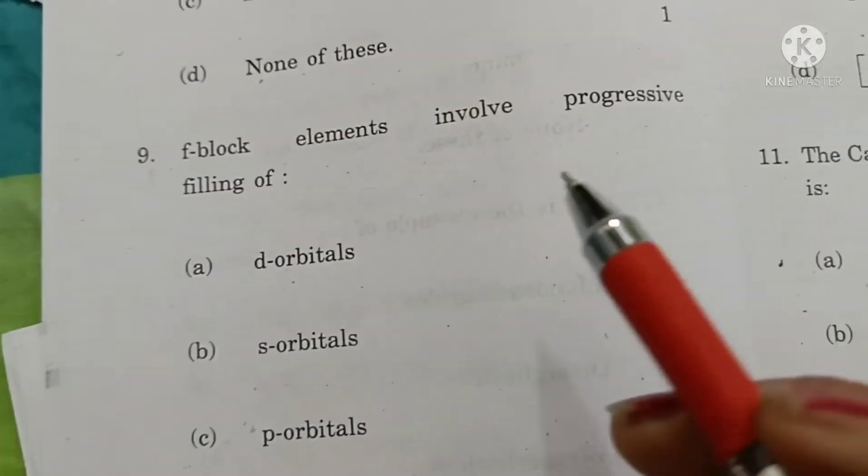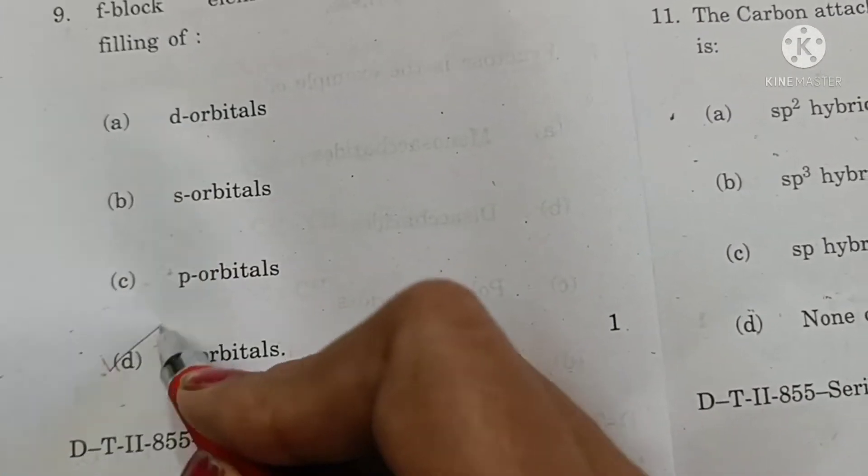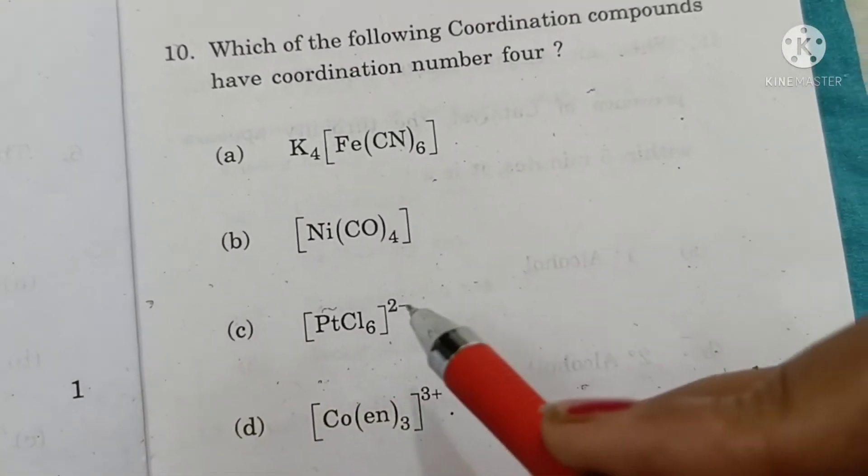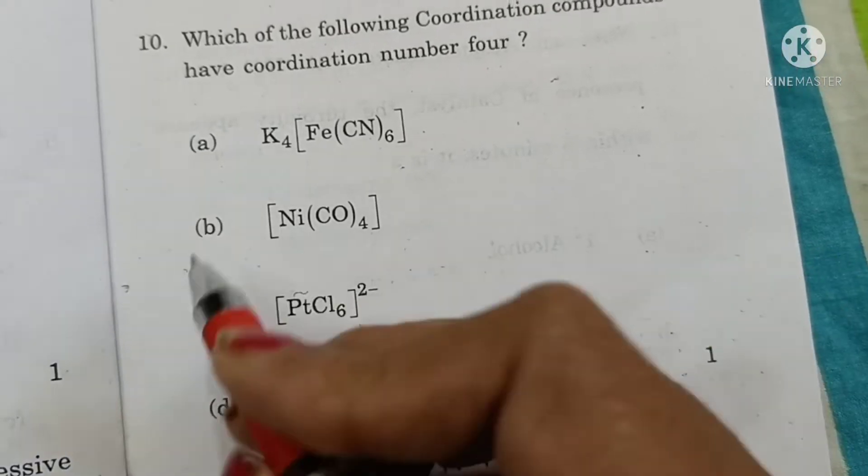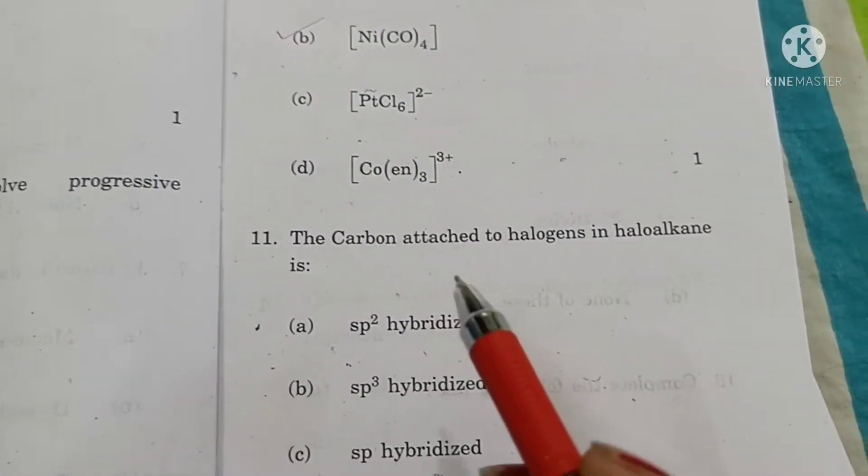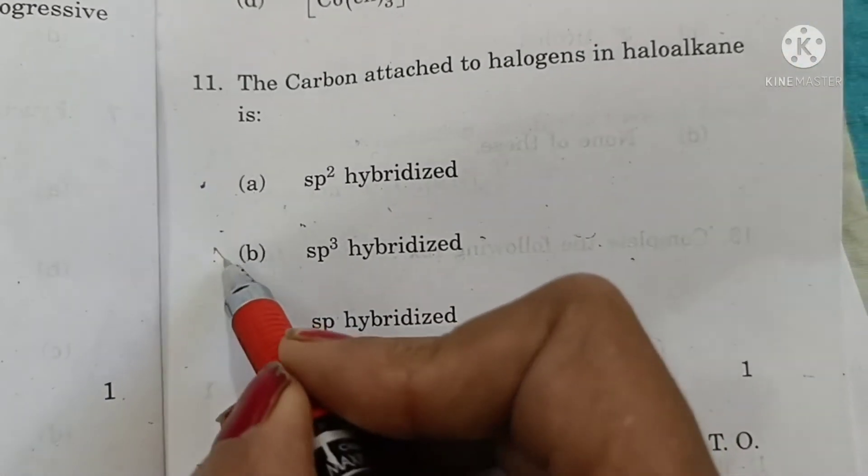F block elements involve progressive filling of F orbitals. Which of the following coordination compounds have coordination number 4? Tetracarbonyl nickel has coordination number 4.